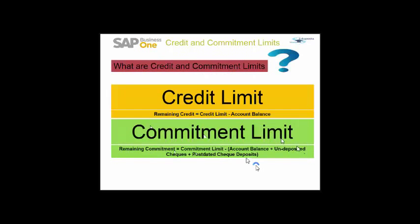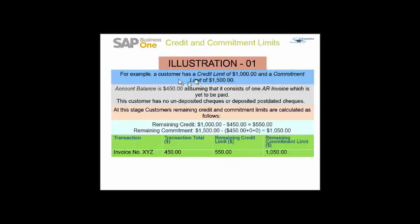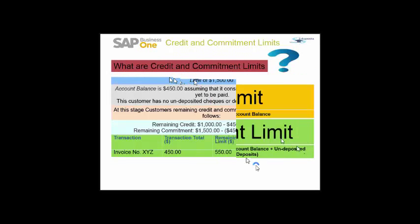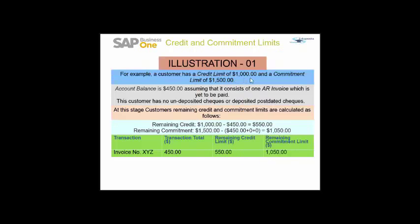Let's see through an example. Let's say there is a customer which has a credit limit of $1,000 and a commitment limit of $1,500. The account balance is $450, assuming it consists of one AR invoice which is yet to be paid. This customer has no undeposited checks or posted dated checks.